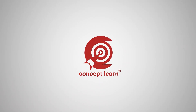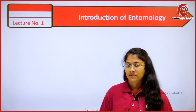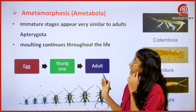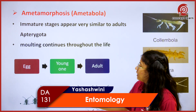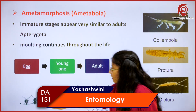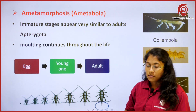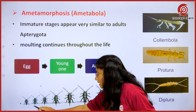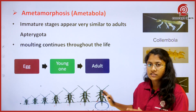Welcome to Concept Learn. Hello everyone, this is Yesha Sweeney. Today I will be dealing with Ametabola, or the Apterygota. Here under the Ametabola, if you see, this is the life stage of the insect which belongs to the Ametabola — this is the egg stage followed by its nymphal stages, and gradually every stage is looking similar in its appearance.